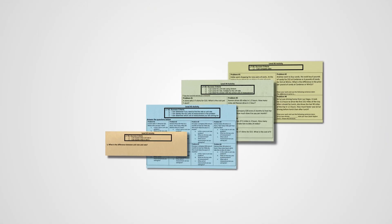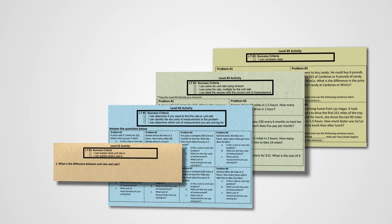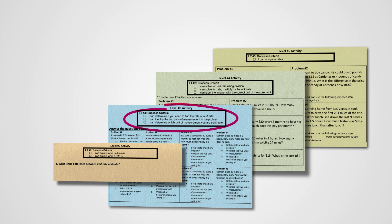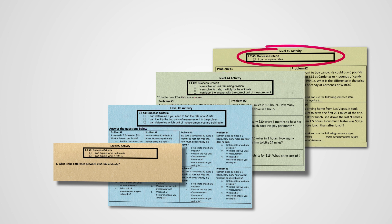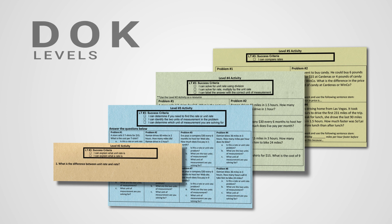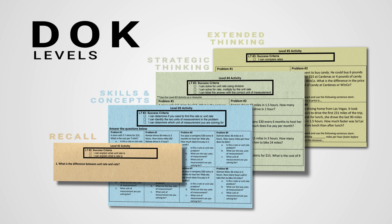The activity for the day was based on the success criteria for our particular learning progression we're working on, and I broke the four activities up into levels. The first level was based on the first two success criteria. The second level was based on success criteria three through five. The third level was based on success criteria six through eight. And then the last level was based on success criteria number nine. If you look at our success criteria, it begins with a DOK one and then builds up, from something very simple to something that requires application.